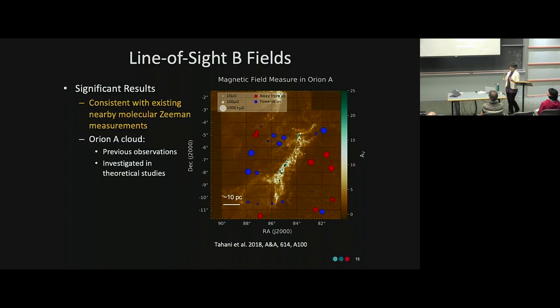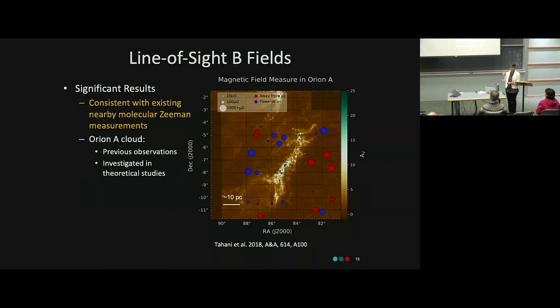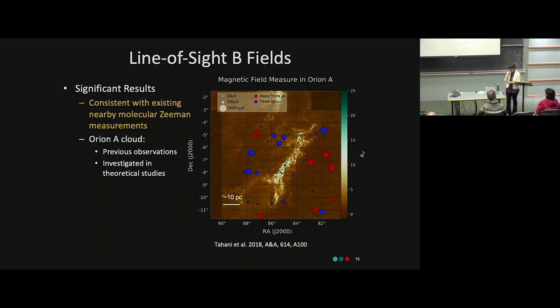For the Orion A molecular cloud, we see that on one side the magnetic field is predominantly pointing away from us (red), while on the other side it points toward us (blue). This magnetic field reversal was previously observed using atomic Zeeman observations in the same region and investigated in theoretical work. We see similar reversals in the Perseus and California clouds, and parts of the Taurus molecular cloud. With upcoming facilities like the Very Large Array, Square Kilometre Array, and its pathfinders, these observations will be significantly improved and we'll have many more detections.